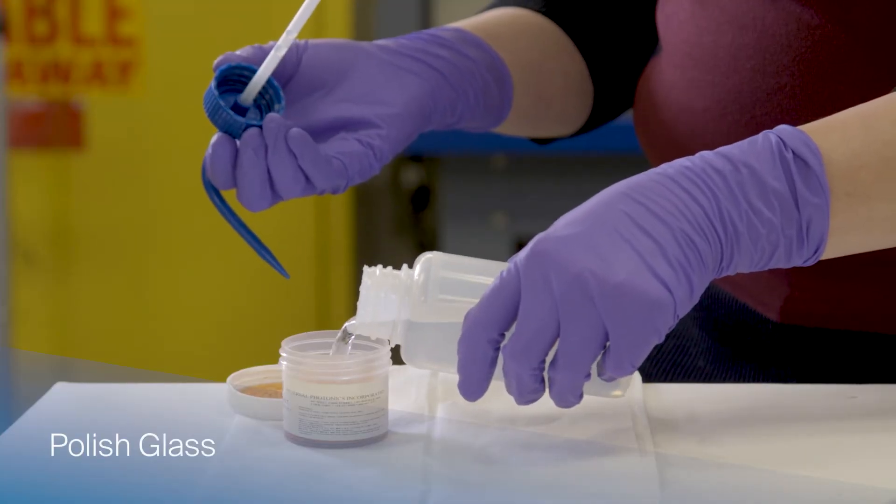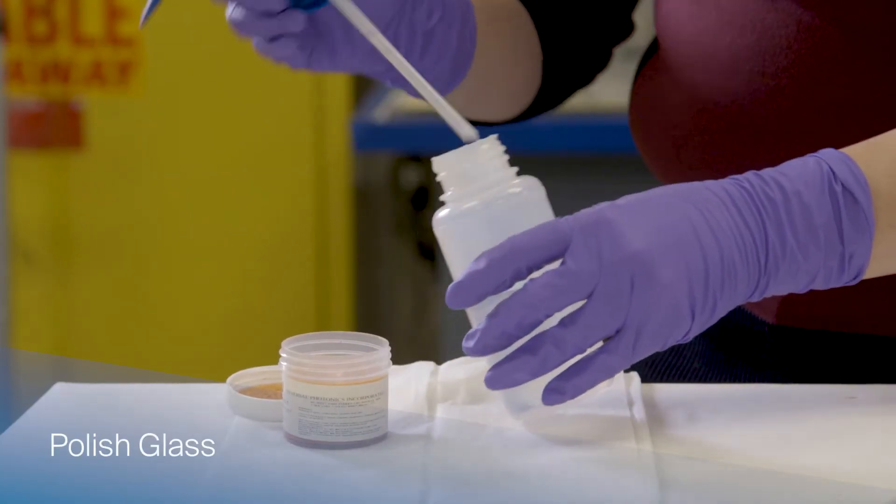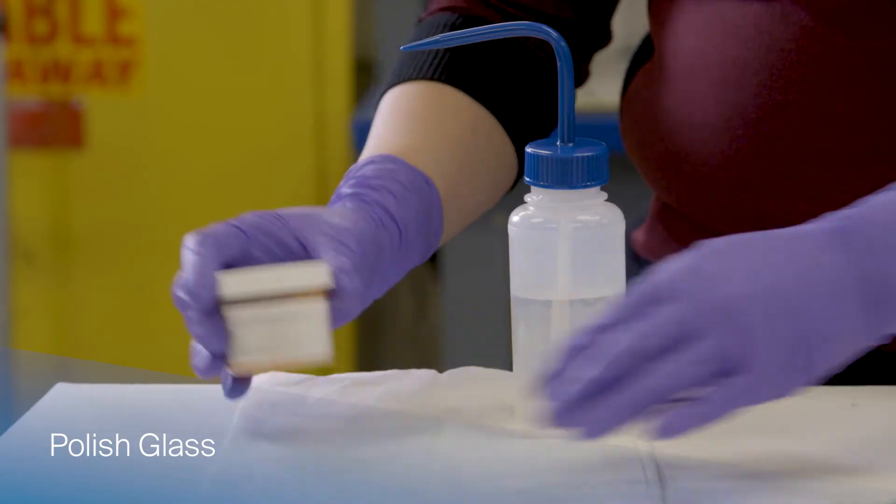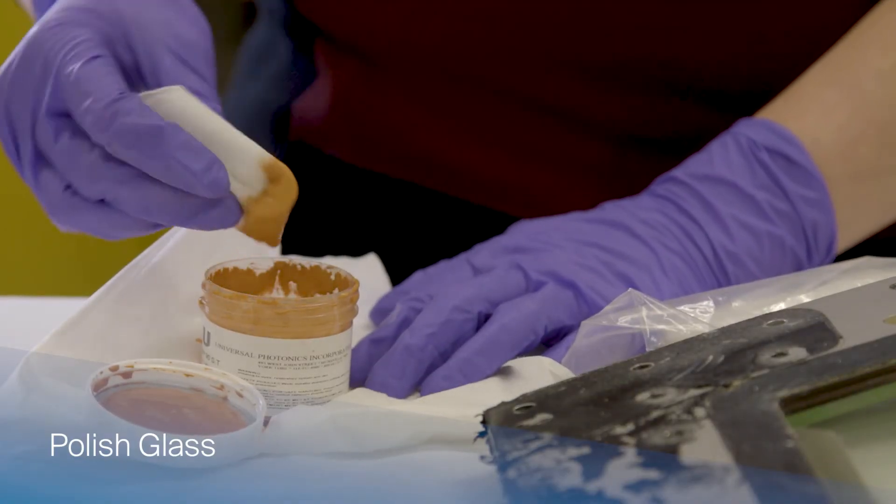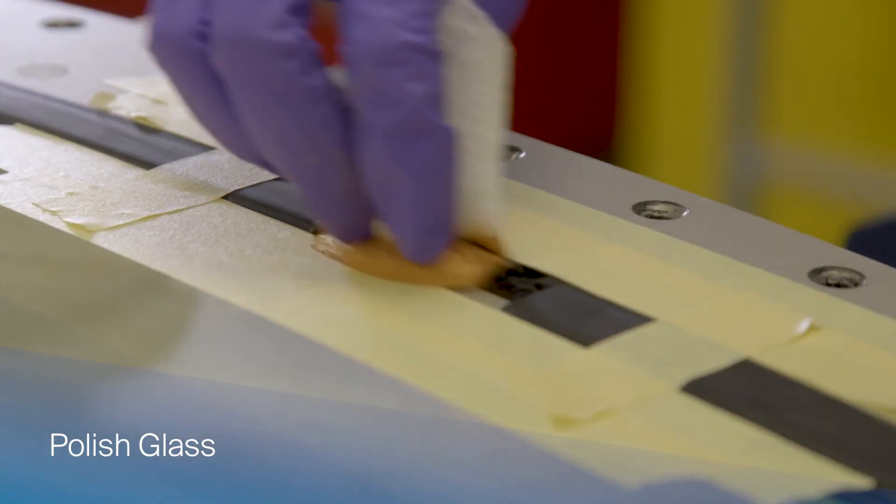Mix deionized water with the polishing compound in the container and shake to mix thoroughly. Dip the gauze in the compound and polish the exposed glass surface.